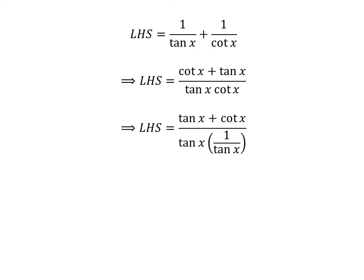We know cotangent of x is equal to 1 upon tangent of x. So left hand side of the identity is equal to tangent of x plus cotangent of x upon tangent of x times 1 upon tangent of x.